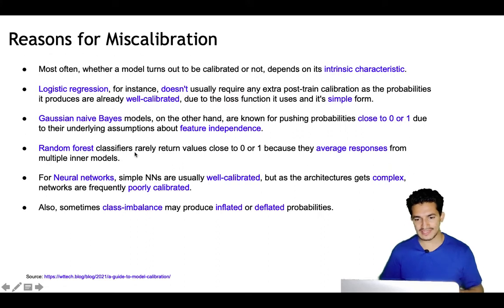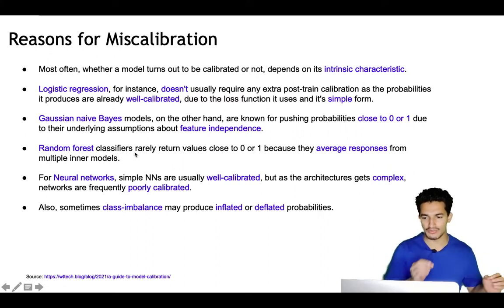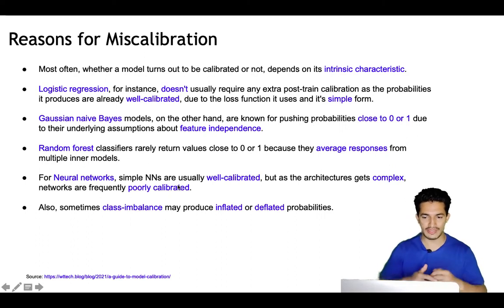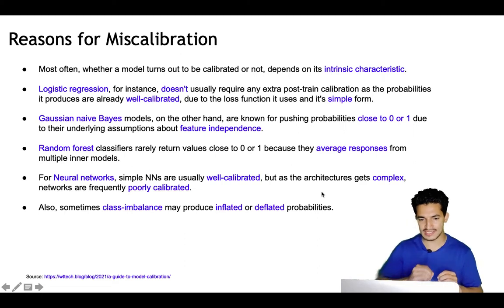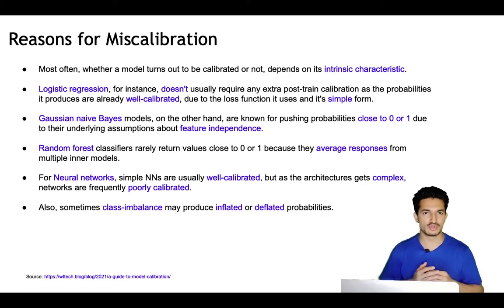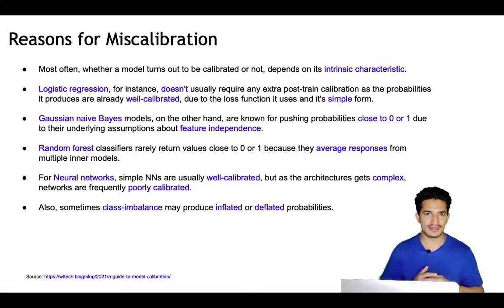Random forest classifiers rarely return values of exactly 0 or 1 because they average the responses of multiple inner models. For neural networks, simple architectures are usually well calibrated, but as architectures become more complex, networks are frequently poorly calibrated and need calibration. Also, class imbalance can cause the probabilities produced to be inflated or deflated.